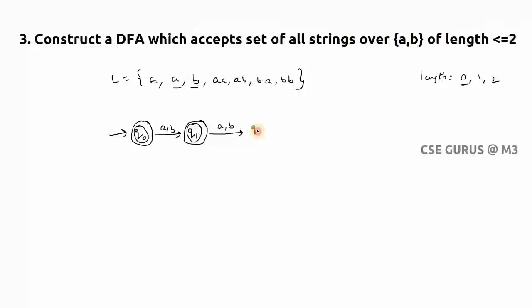So now this is for two-length one. Now you can check out: if q0 is a final state, that means for epsilon; q1 is a final state, means for string length one; q2 is the final state, means it has to accept string length two.